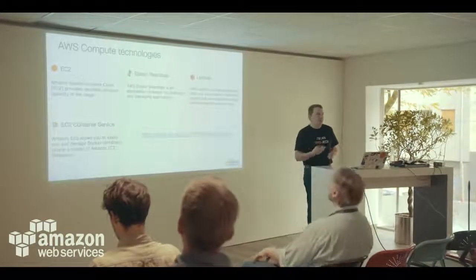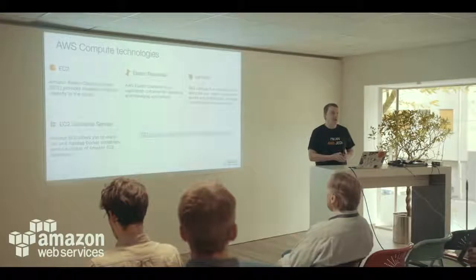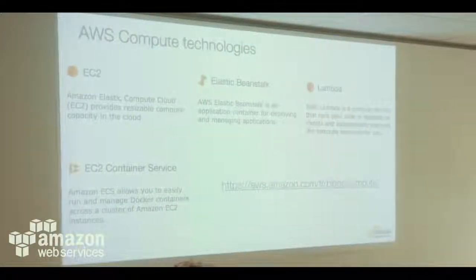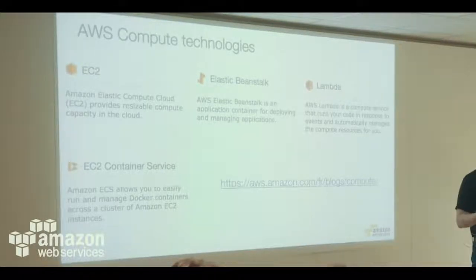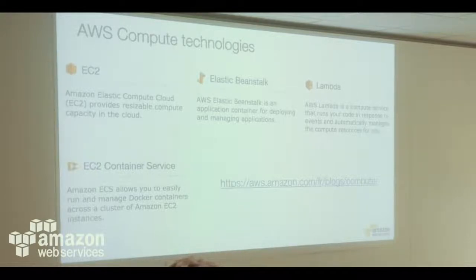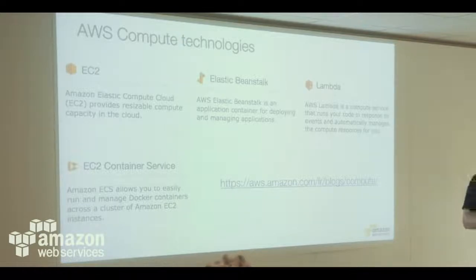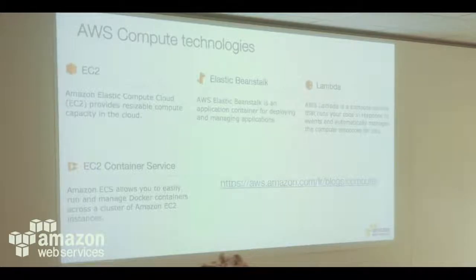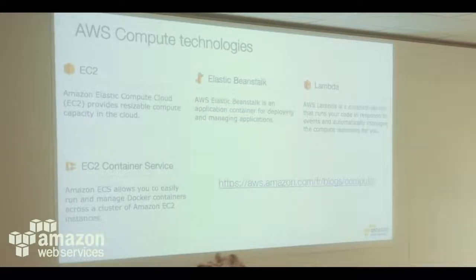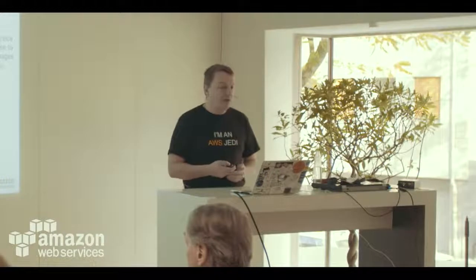We have four ways of deploying code, four different technologies on AWS. The first is EC2 — deploying virtual machines. Second is Elastic Beanstalk, a platform-as-a-service product where you deploy your app without managing the underlying infrastructure. We have ECS, which lets you manage Docker clusters. And last but not least, Lambda — a new way of deploying code by deploying only stateless functions. We have a blog dedicated to compute technologies that's updated all the time.